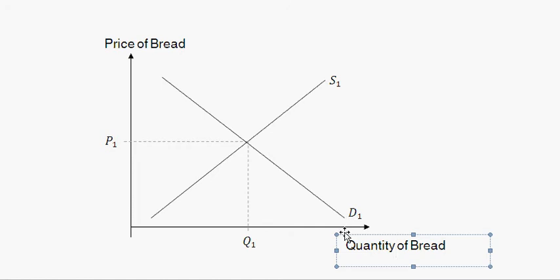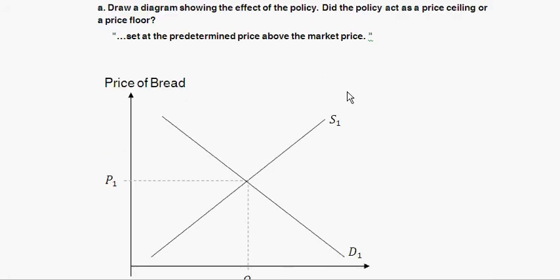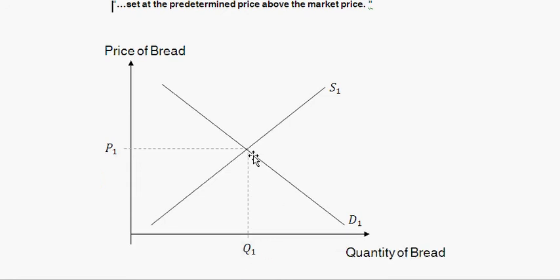The downward-sloping demand curve reflects that at very high prices there's low quantity demanded, and at low prices more people demand bread. Similarly, there's an upward-sloping supply curve showing that at low prices few suppliers are willing to supply much bread, and at high prices the supply is much greater. Without any price controls, the equilibrium price is P1 and the equilibrium quantity is Q1, where quantity supplied equals quantity demanded.